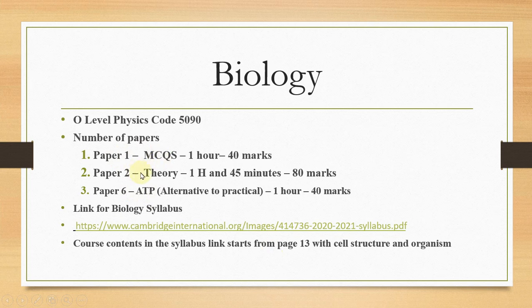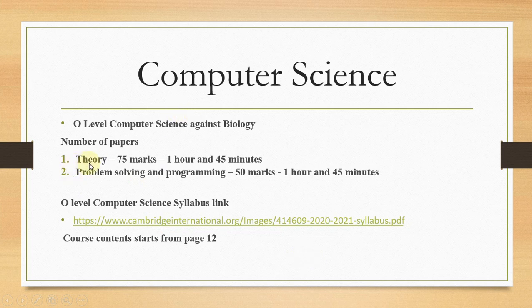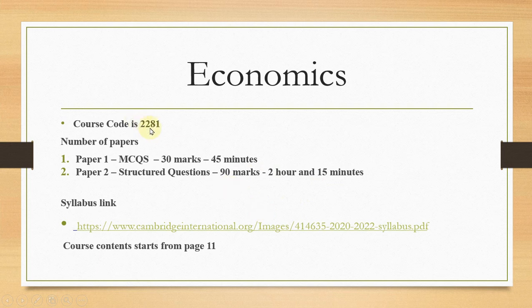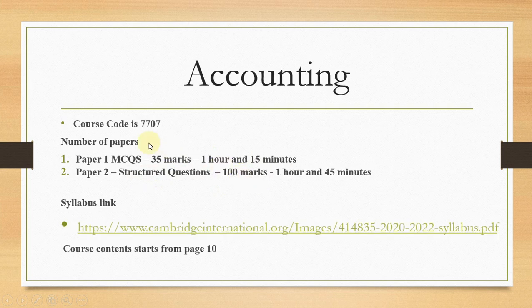Computer Science has two papers. Paper 1 is 75 marks, known as Theory paper. Paper 2 is Problem Solving and Programming, 50 marks, one hour 45 minutes. This is the link for syllabus. Economics code is 2281, two papers. Paper 1 is MCQs, Paper 2 is Structured Question, 30 marks and 90 minutes. Accounting code is 7707. Paper 1 is MCQs, Paper 2 is Structured Question, 35 marks and 100 marks.